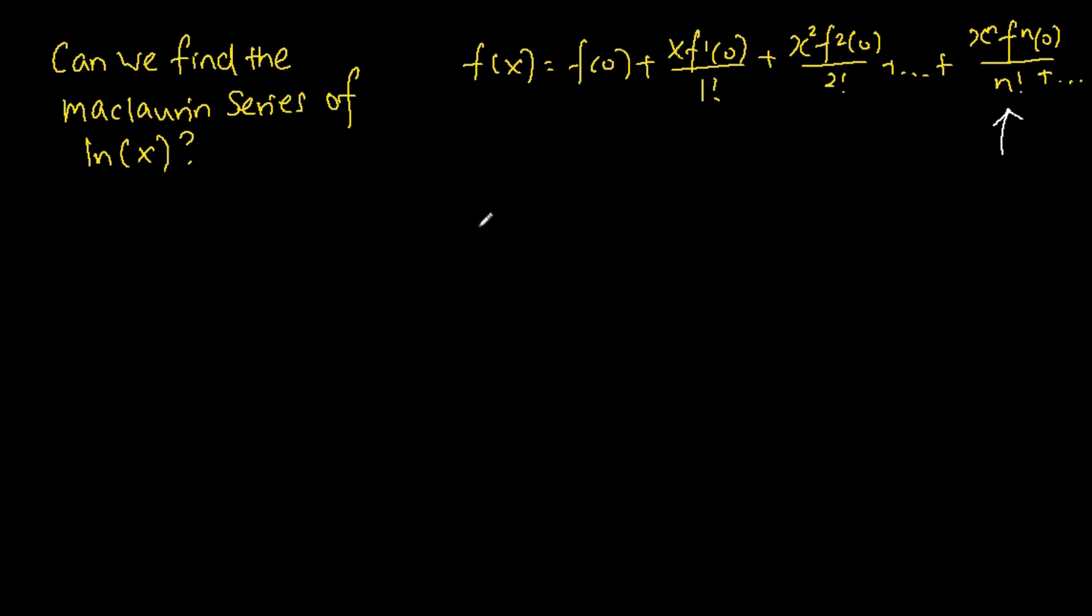Before we are able to find the Maclaurin series of ln(x), we have to be able to evaluate the following: finding the function evaluated at x equals zero, as well as the function differentiated one time and then evaluated at x equals zero. I will start here.